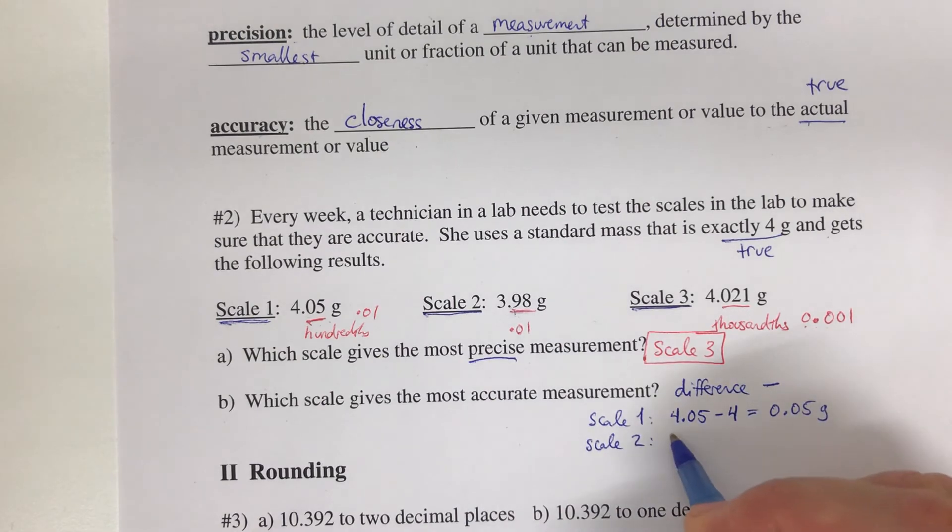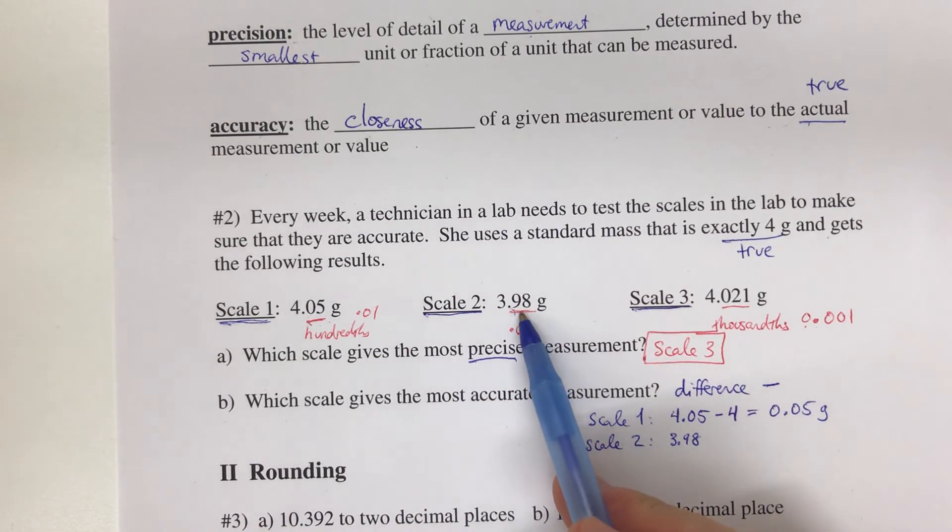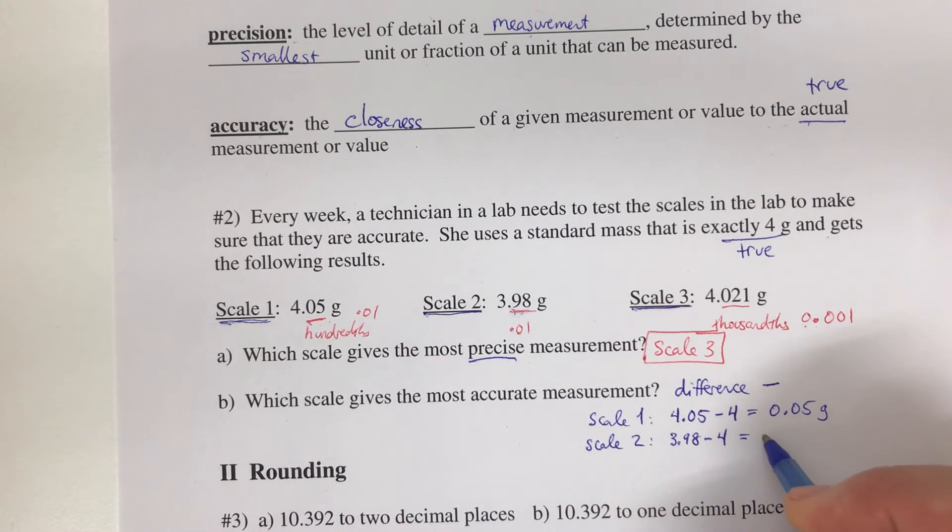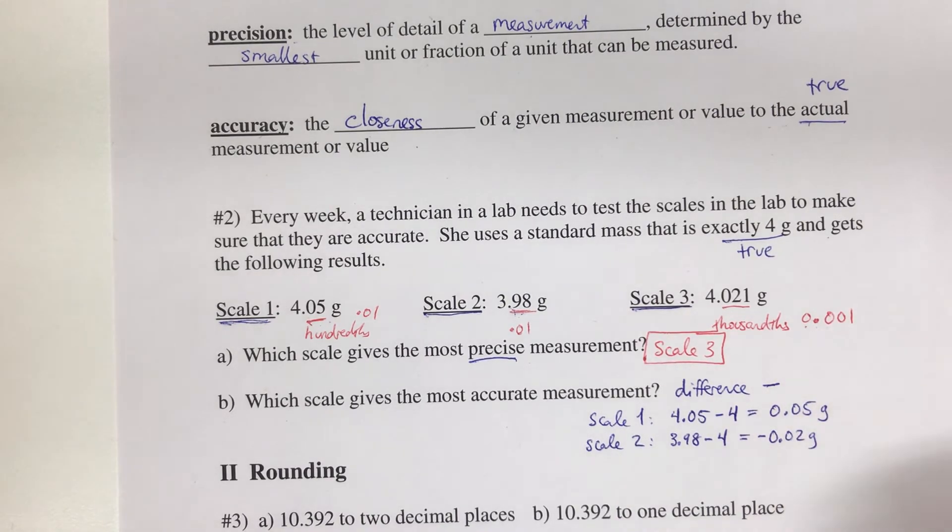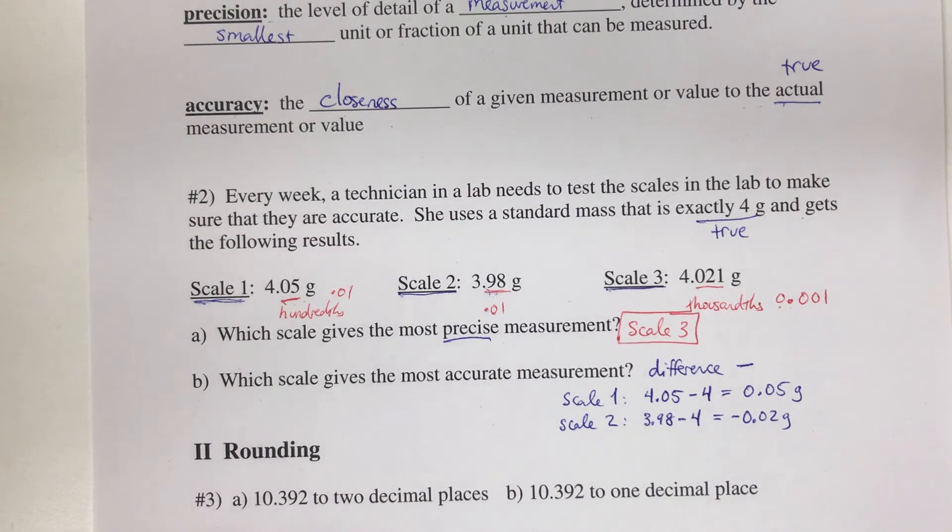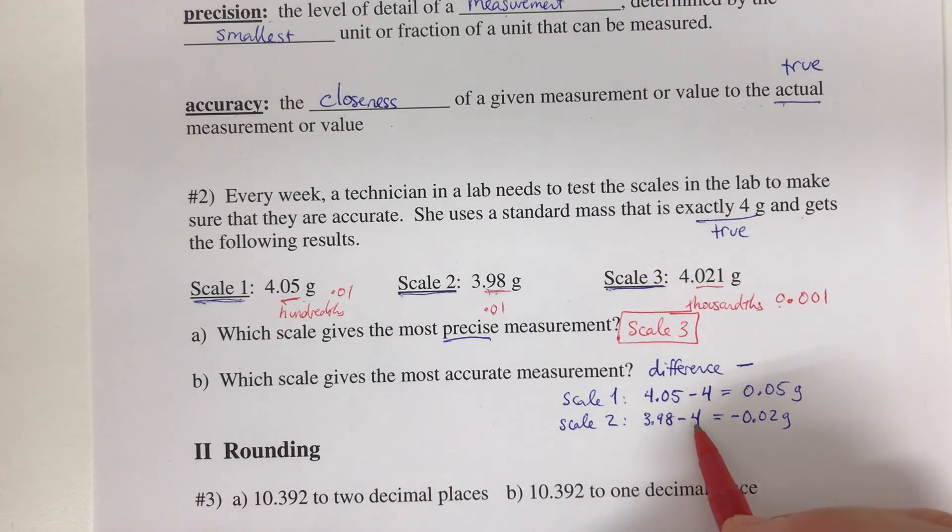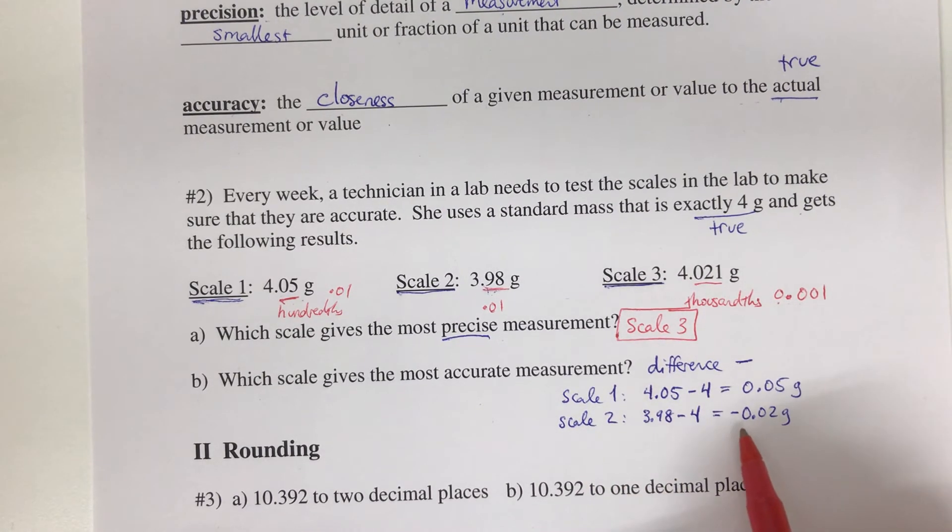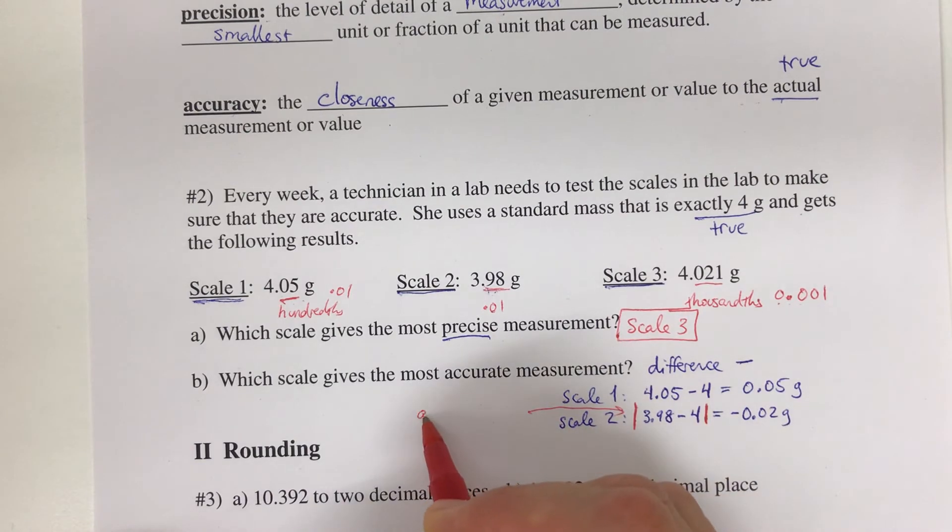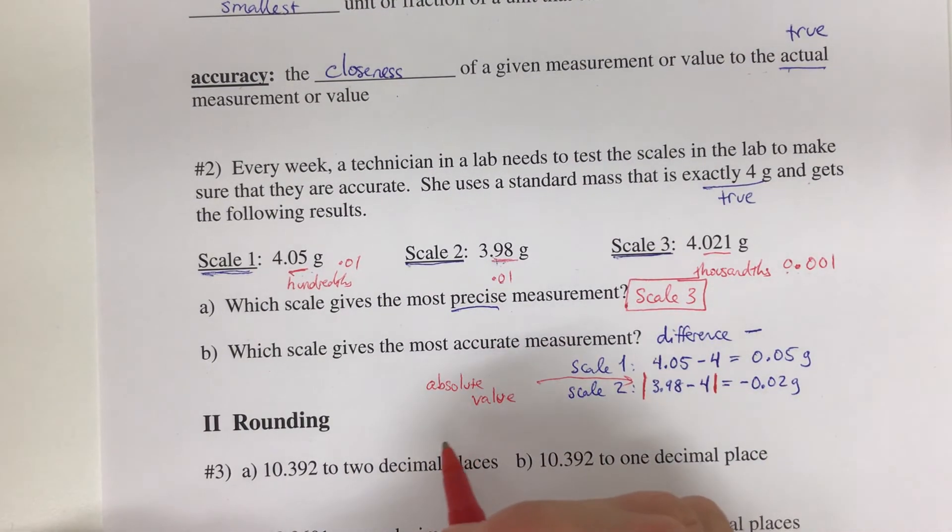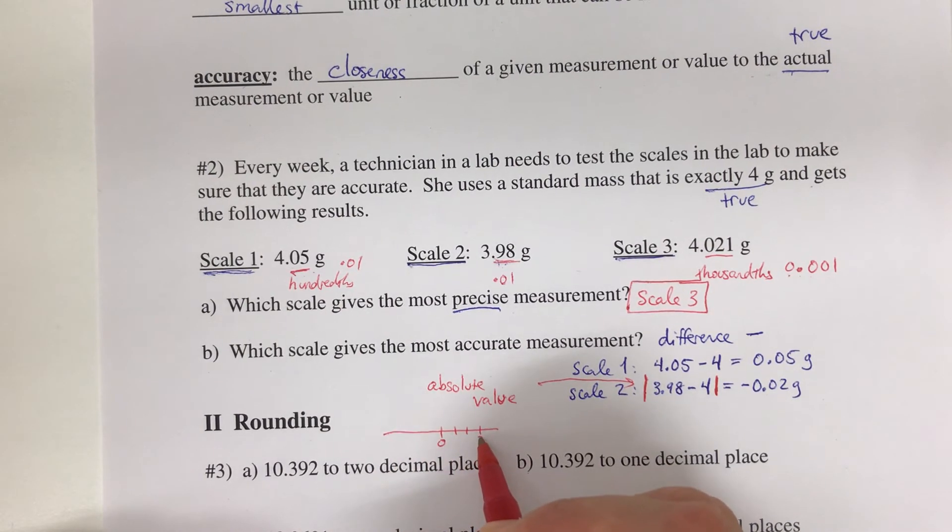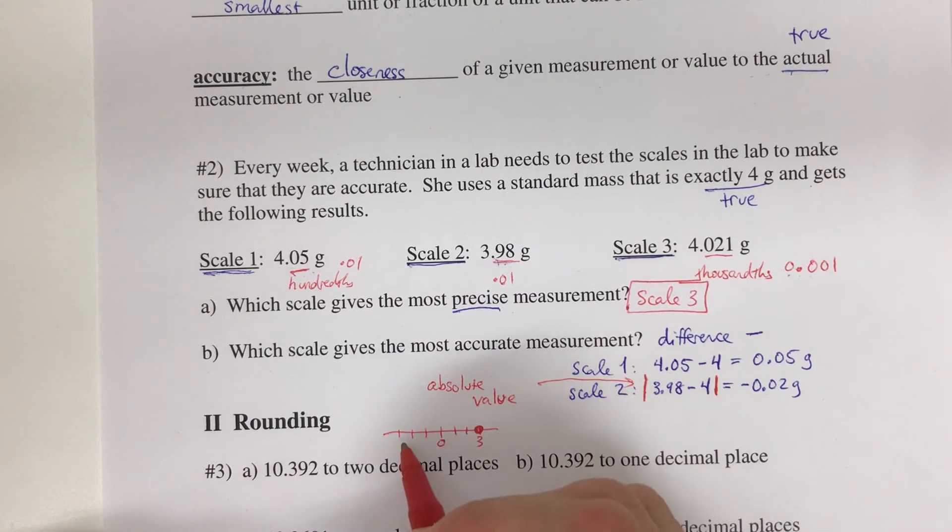How accurate were we? We were off by 0.05 grams. Scale 2 measured 3.98—that's what the scale said. The actual weight was 4. If we subtract that, we end up with a negative number, but it doesn't matter the order. We want to know how close Scale 2's measurement was to the real value—it was off by 0.02 grams. You might see these symbols, two bars, which represent absolute value.